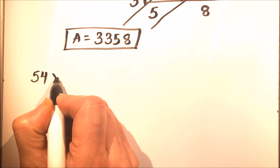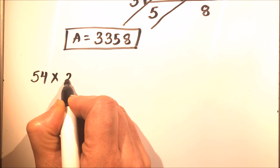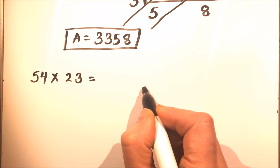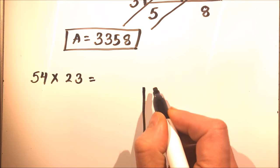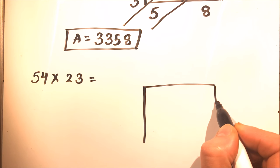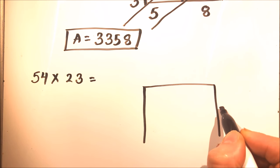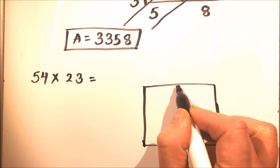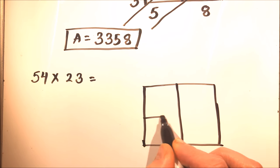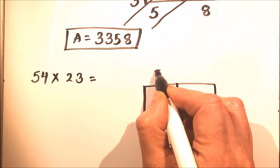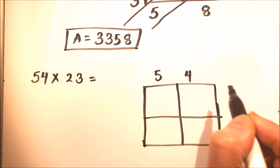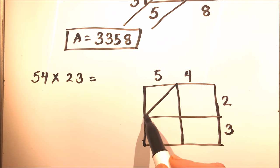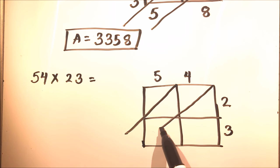Now let's take another example: fifty-four times twenty-three. Again we'll make a box with four sections in it, write the numbers fifty-four on top and twenty-three on the side, then divide the boxes diagonally like this.